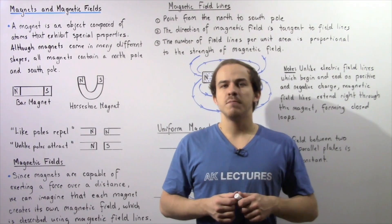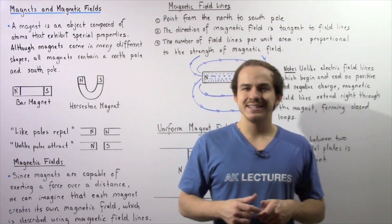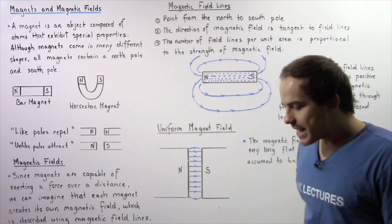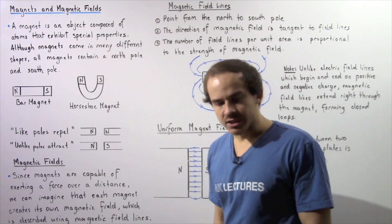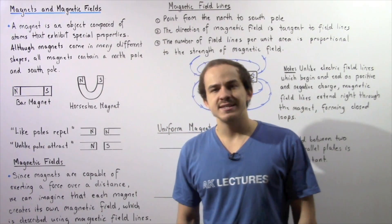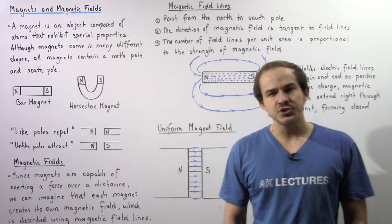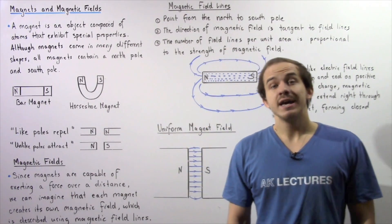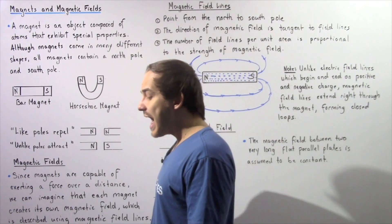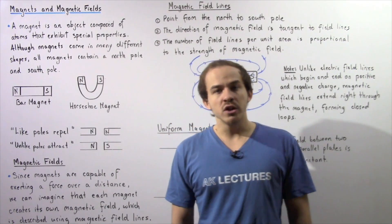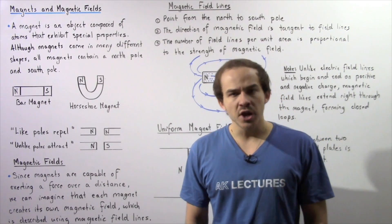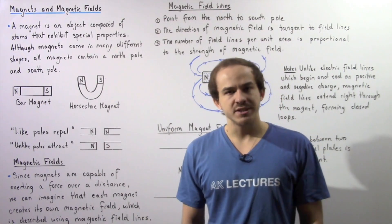In this lecture, we're going to give a brief introduction into magnets and magnetic fields that magnets create. A magnet is essentially an object that contains atoms which are arranged in a special type of way and which exhibits special type of properties. For example, the atoms within magnets will create an attractive or repulsive force on other atoms found in other materials.